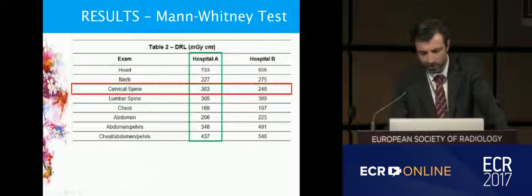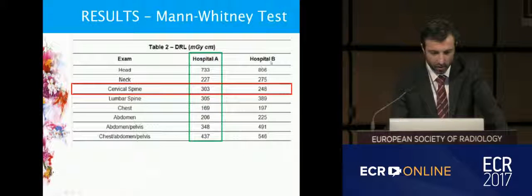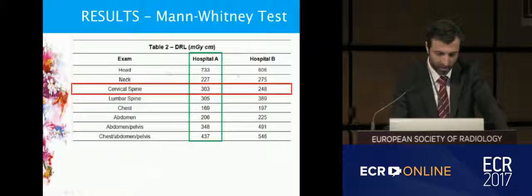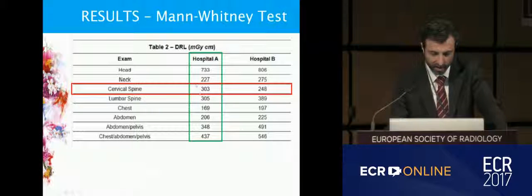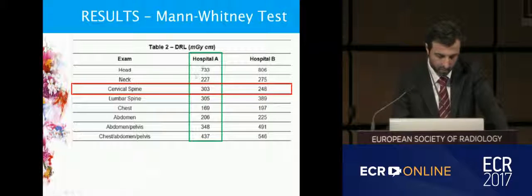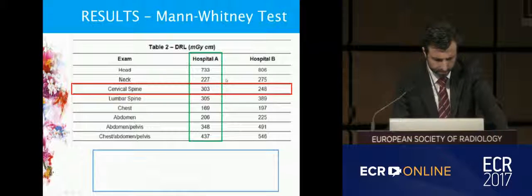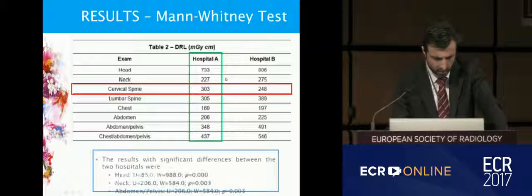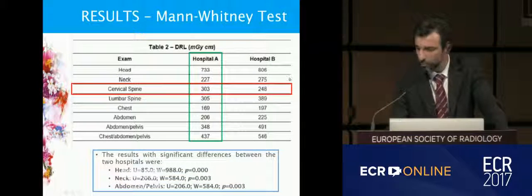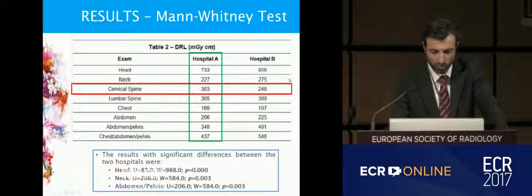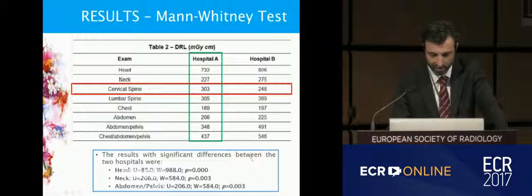Comparing both hospitals, Hospital B has higher DRL values than Hospital A, excluding the cervical spine which has a higher value in Hospital A, expressed in milligrams per centimeter. The results with statistically significant differences between the two hospitals were the head, the neck, and the abdominal pelvis.